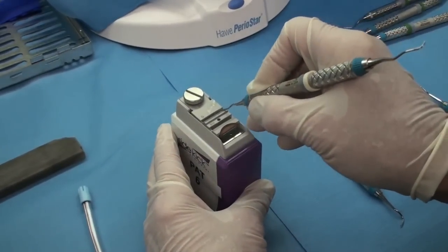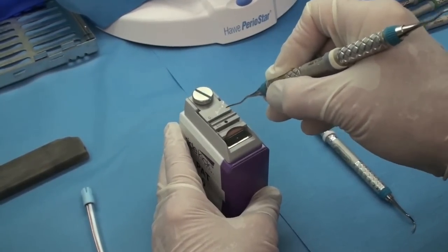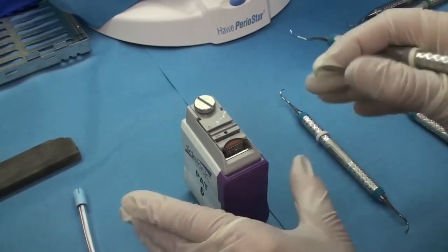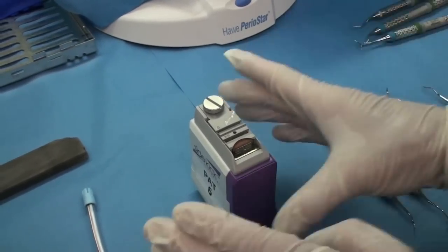And the directions that come with this though, they have you moving it back and forth. I don't like that because it jumps too much and then I feel like I'm changing the blade. Same at the Periostar. They have you moving the back part. Don't do that because then again, you're changing the angle of your blade.